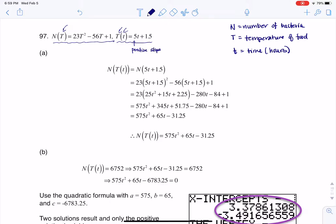So we are told here to find the composite function N of capital T of lower T. So I'm going to start this the same way I would every composite function. I'm going to go ahead and substitute out that innermost parentheses, right? So we were told capital T of little t is equal to 5t plus 1.5. So that is what I'm putting in here.